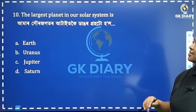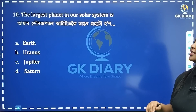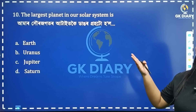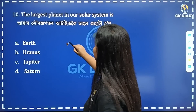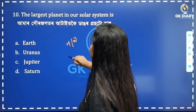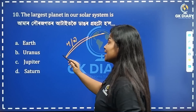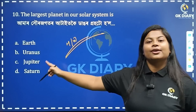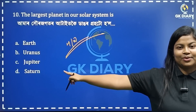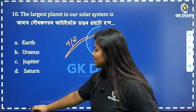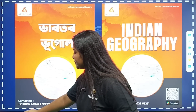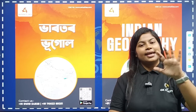The largest planet in our solar system — the largest planet in our solar system is Jupiter.